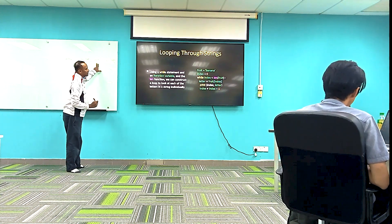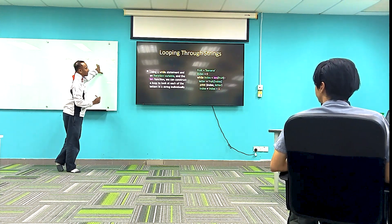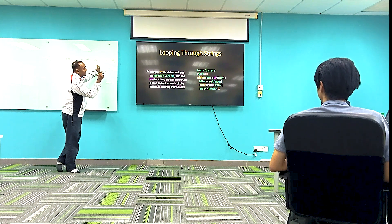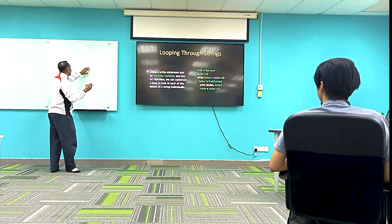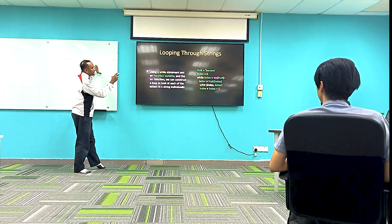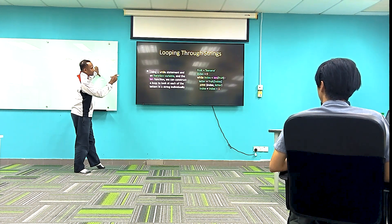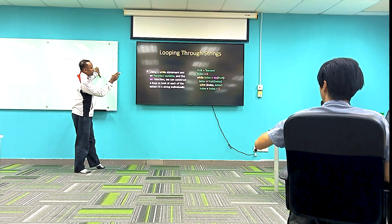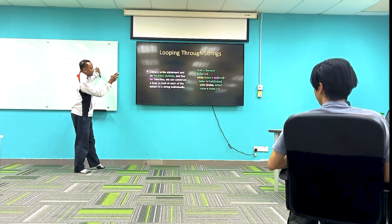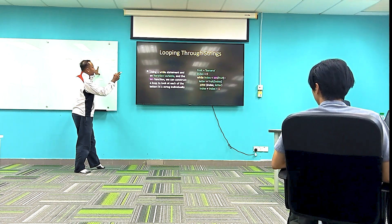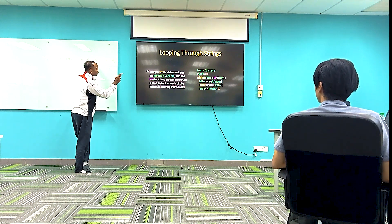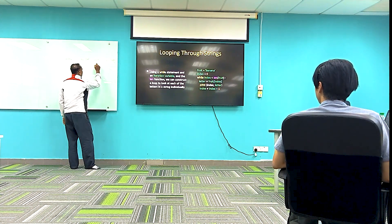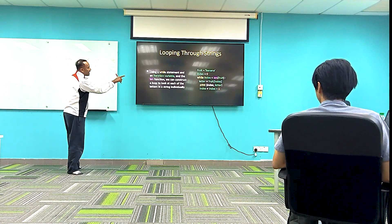For example, show the first letter. We have a variable called fruit. Letter equals fruit at index zero — that is, fruit bracket zero. So letter is 'B'. Then we print the index and the letter.